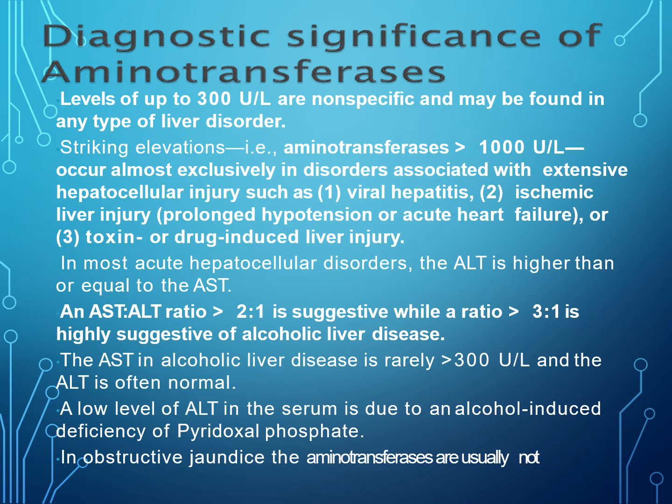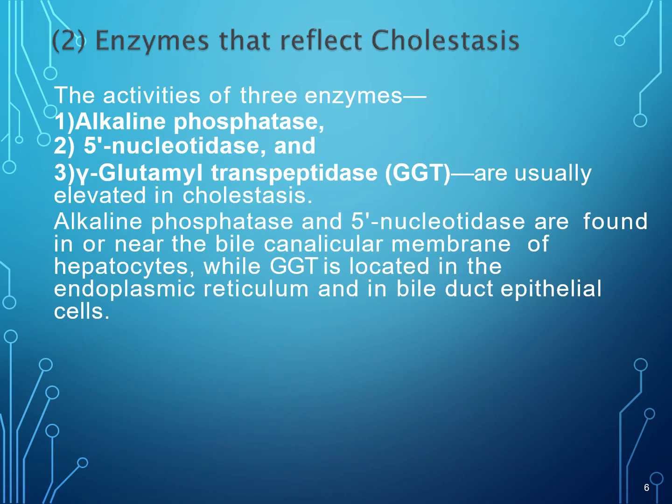In alcoholic liver disease, AST is rarely less than 300 units per litre and ALT is often normal. A low level of ALT in the serum is due to an alcohol-induced deficiency of pyridoxal phosphate. In obstructive jaundice, the aminotransferases are usually not markedly elevated.